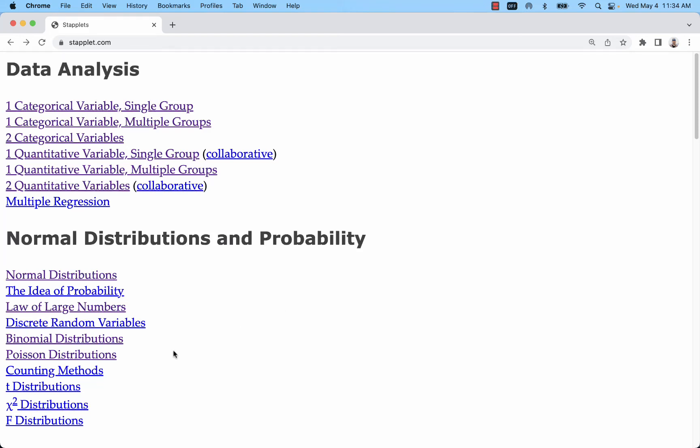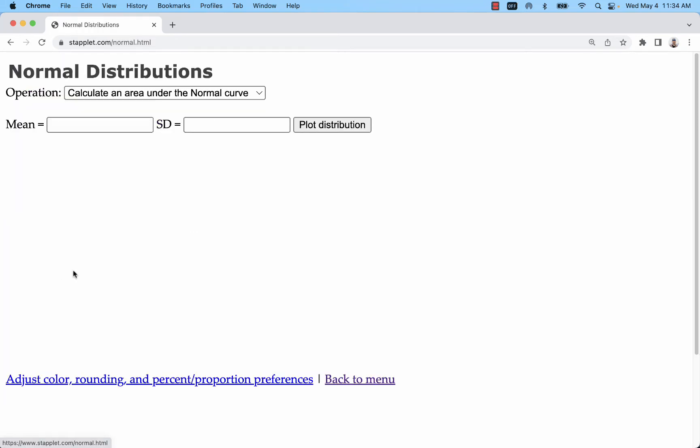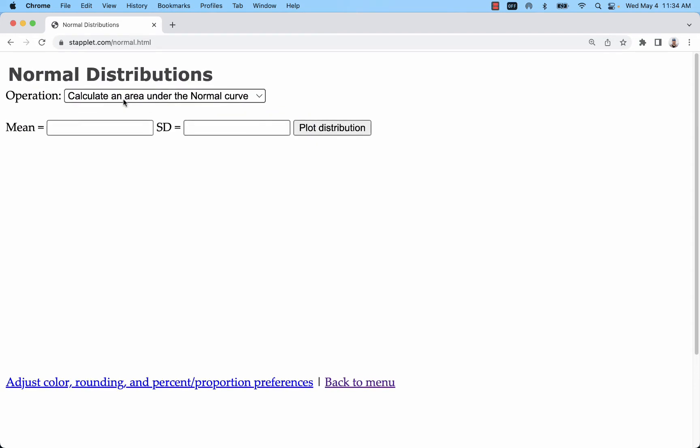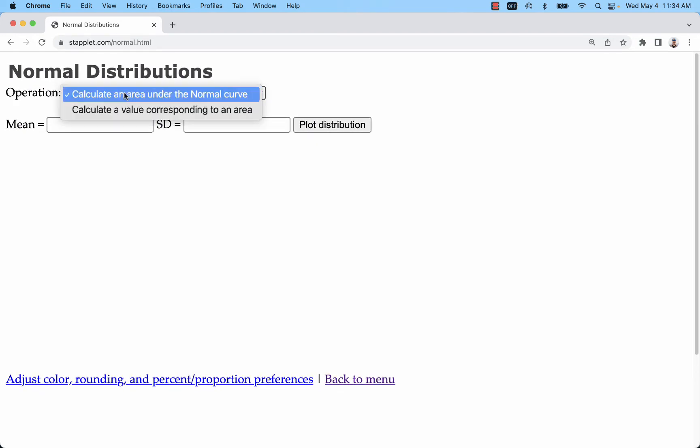I'm going to take a look at normal distributions in staplet.com. This applet works in two directions. You can either calculate the area under a curve using values, or we can calculate the value corresponding to area.